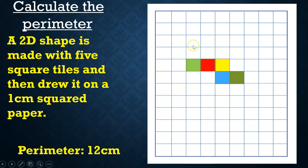Again, 1 centimeter per square. 1, 2, 3, 4, 5, 6, 7, 8, 9, 10, 11, 12. So the perimeter of this shape is 12 centimeters.